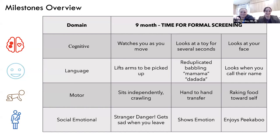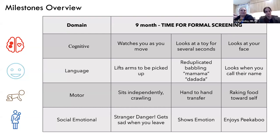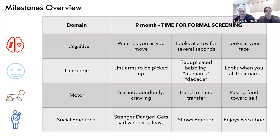Motor at nine months: sitting independently and starting to crawl — crawling used to be expected at seven months but is now placed closer to nine months. Hand-to-hand transfer, moving a toy from left to right hand, is around eight to nine months. Raking food toward themselves is also expected at nine months — which is why we introduce food exploration at six months, so by nine months they can reach, rake, and bring food to themselves.